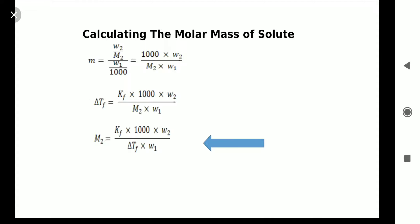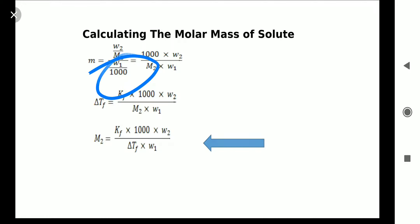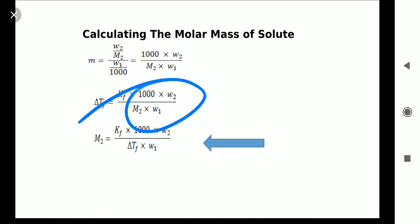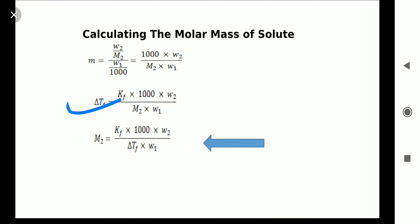Now we will derive a relation to find the molar mass of solute. Molality equals moles of solute upon mass of solvent in kg. Moles of solute is W2 upon M2, where W2 is mass of solute and M2 is molar mass of solute. If mass of solvent is given in grams, we write W1 upon 1000. Rearranging, molality M equals 1000 into W2 upon M2 into W1. Substituting into the formula, delta Tf equals Kf into 1000 into W2 upon M2 into W1.